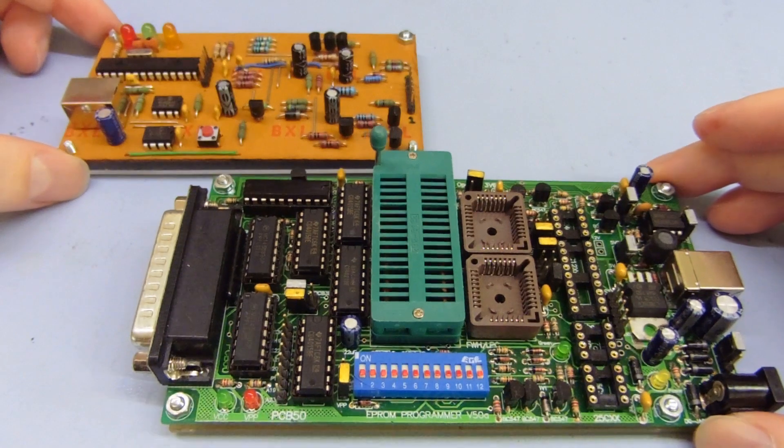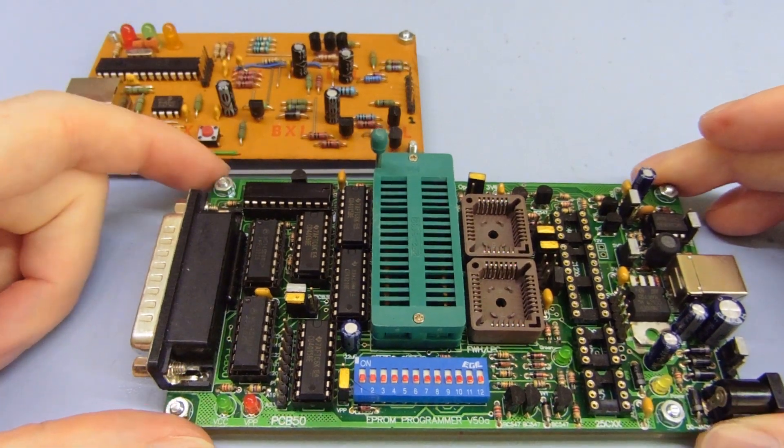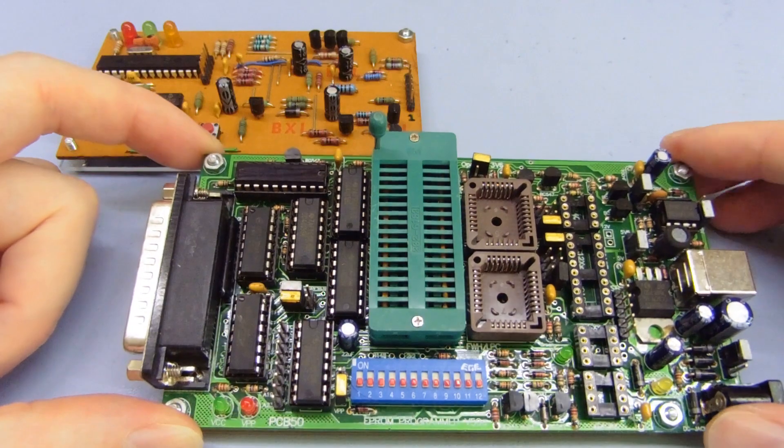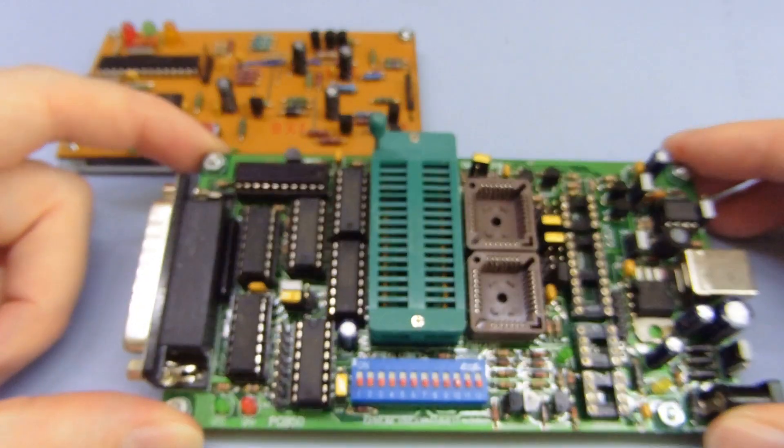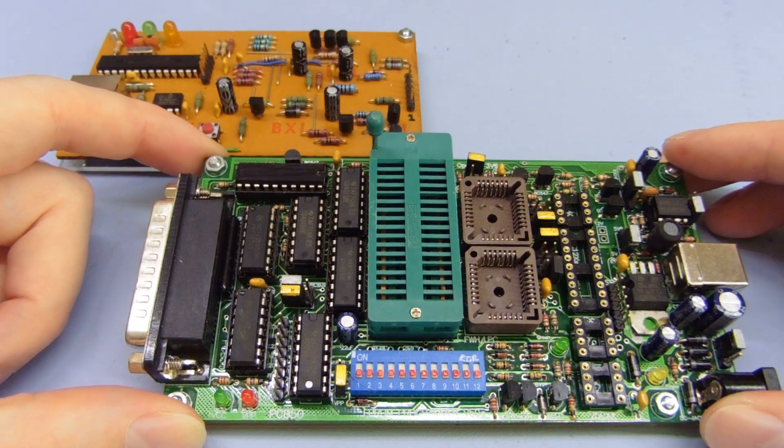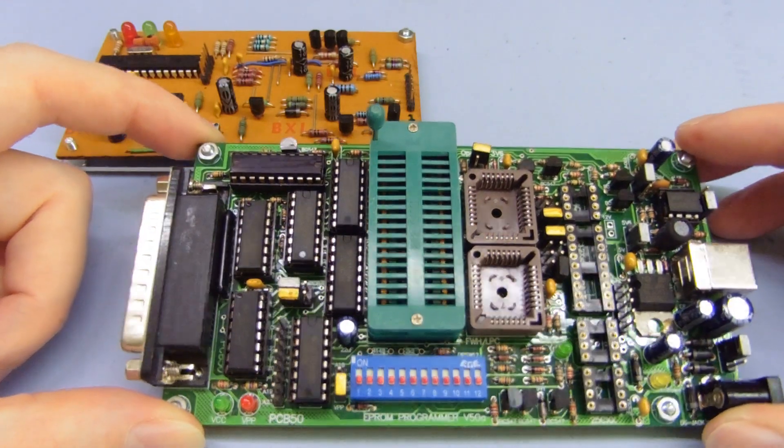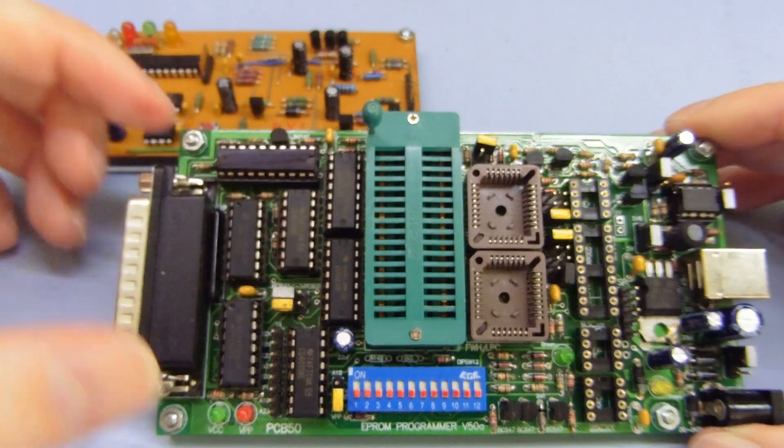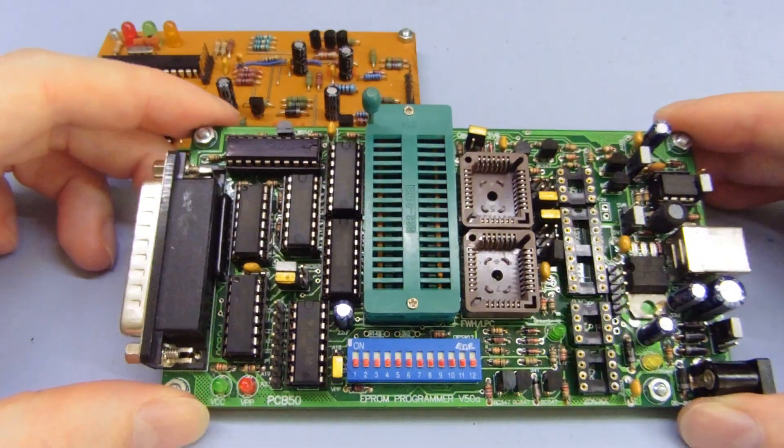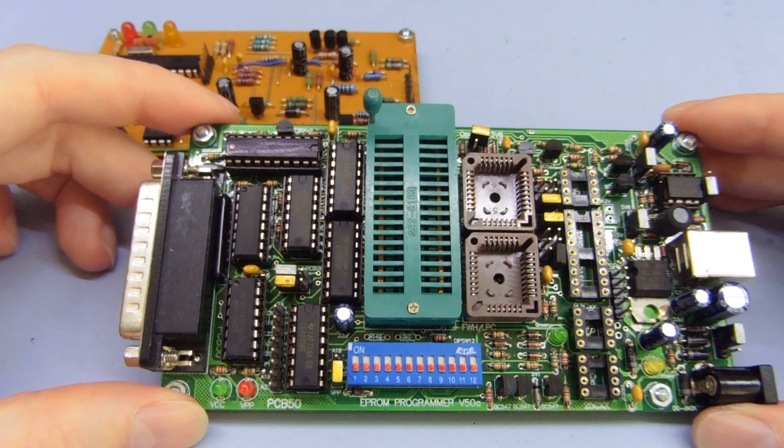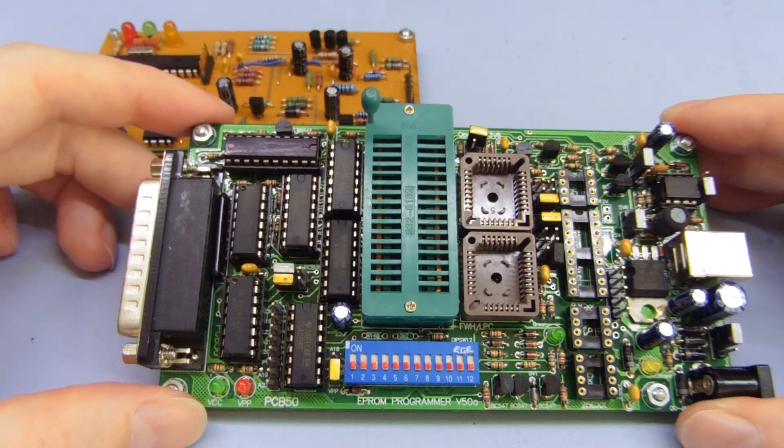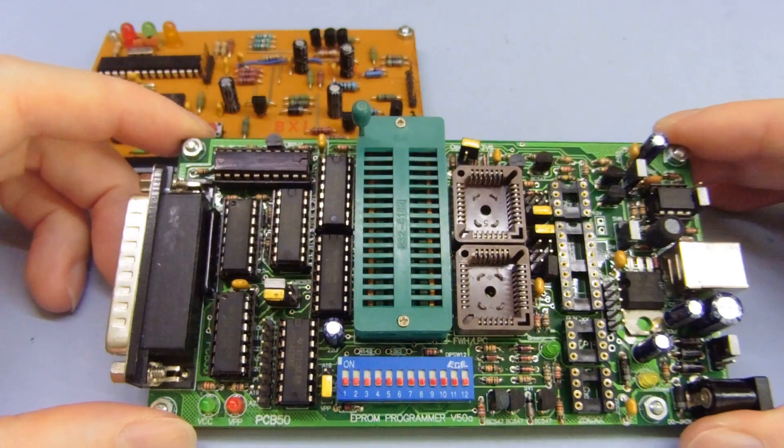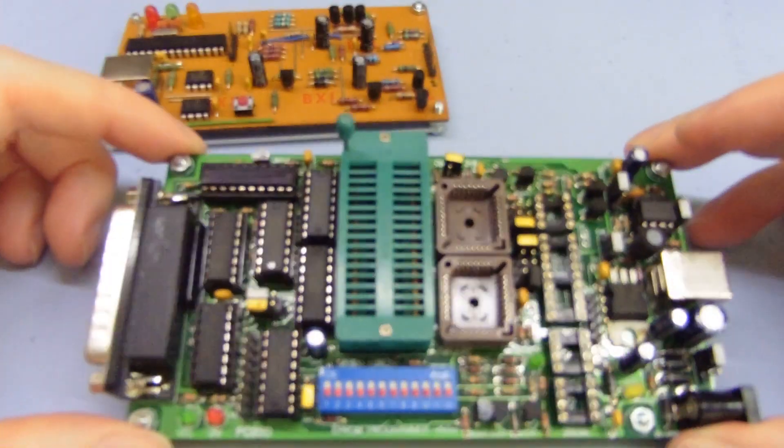The option I used was to program that chip with this other programmer here. This is a Willem version 5 EEPROM programmer primarily, but it can do some microcontrollers as well. It can do some of the PIC series, usually the older parts and smaller parts, and none of the modern ones. Theoretically I suppose it's possible because this thing is just a simple parallel port connected thing with a few shift registers, and as long as you have the software support you could probably program just about anything.